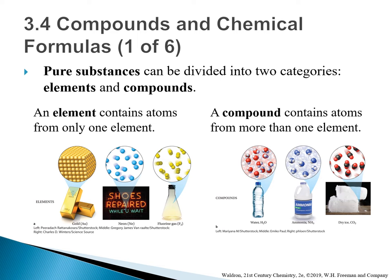Pure substances can be divided into two categories: elements and compounds. An element contains atoms from only one element — things such as gold from a gold bar, neon gas from neon light, and fluorine from fluorine gas. A compound contains atoms from more than one element, things such as a water molecule. H2O combines oxygen and hydrogen. Ammonia, NH3, combines nitrogen and hydrogen. Dry ice, CO2, combines carbon and oxygen.